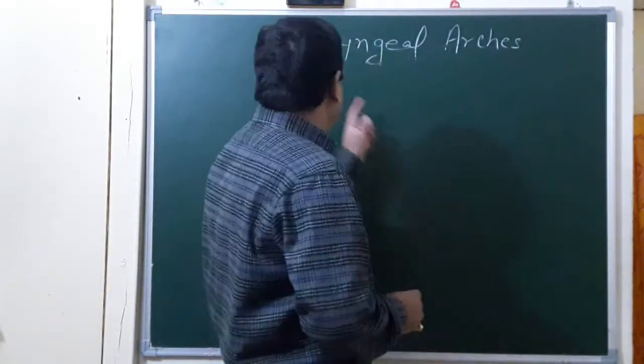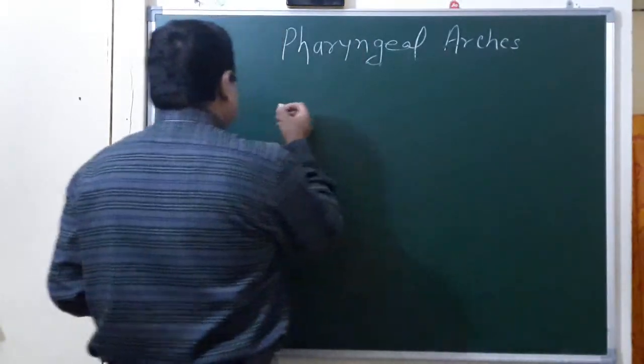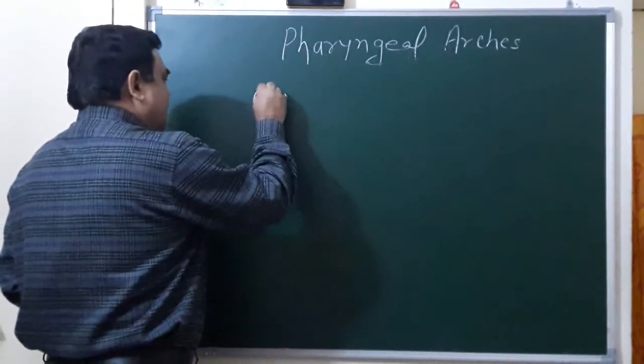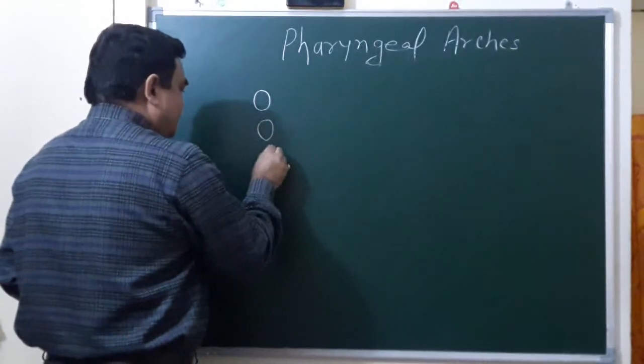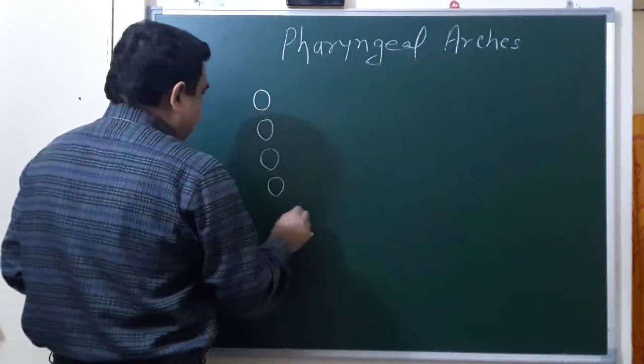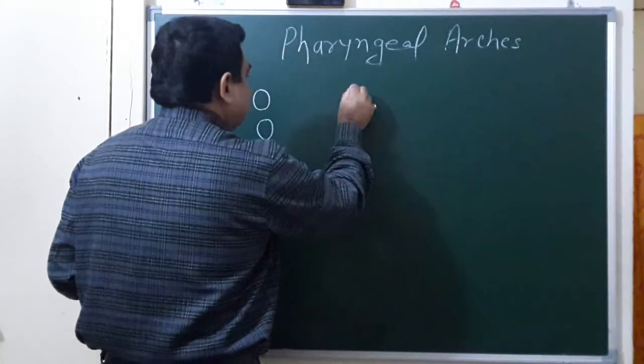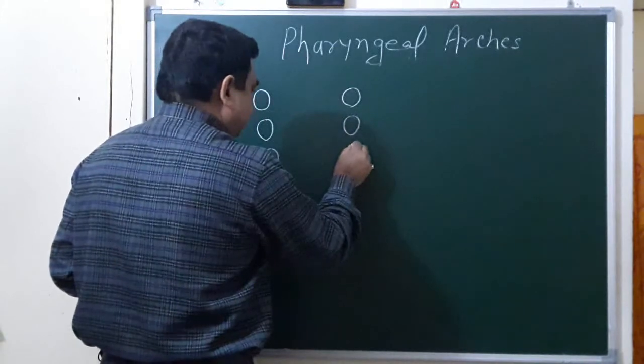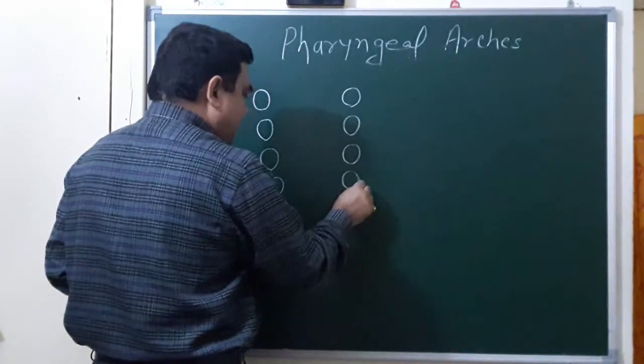Now we will discuss about the pharyngeal arch. Pharyngeal arches you have seen in previous lectures. These are series of thickening in the linear part of developing foregut.